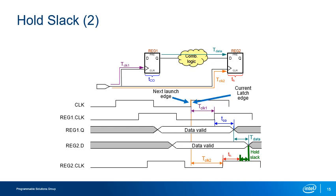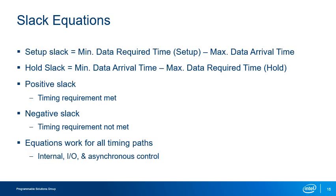Having positive hold slack also prevents double clocking, which occurs when the data arrival time is so low compared to the clock arrival time that data is clocked through two subsequent register stages in a single clock cycle. Timing Analyzer, by default, performs a pessimistic analysis using worst-case values for both calculations. If the calculated slack is positive, timing requirements have been met; if negative, timing is failing. These equations apply whether we are talking about internal paths, IO paths, or asynchronous control signals.